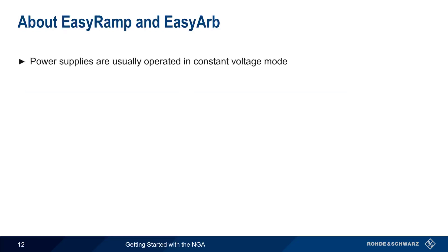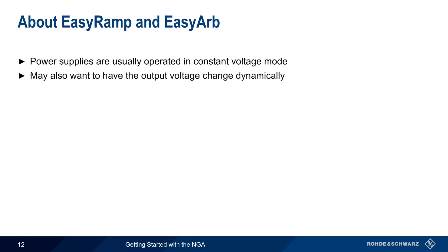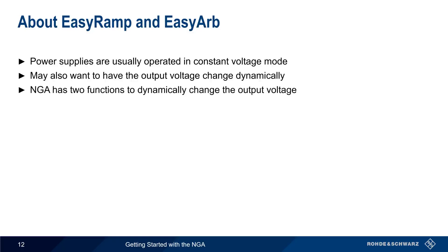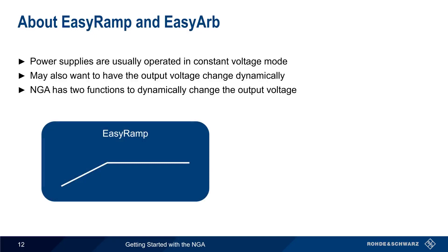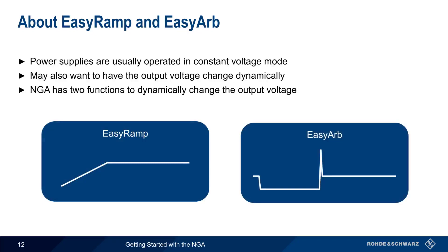Although power supplies are usually operated in constant voltage mode so as to provide a fixed voltage, there are cases where we may want to have an output voltage that dynamically changes based on a user-configured pattern or sequence. The NGA supports two different functions for dynamically changing the output voltage, namely EZRAMP and EZARB. Let's take a closer look at these.